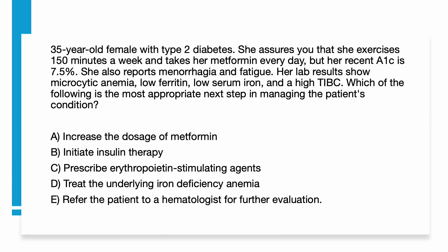A 35-year-old female with type 2 diabetes presents to your clinic. She assures you that she exercises 150 minutes a week and takes her metformin every day. Her recent A1c remains 7.5%. She also reports menorrhagia and fatigue. Her lab results show microcytic anemia, low ferritin, low serum iron, and a high TIBC. Which of the following is the most appropriate next step in managing this patient's condition? Increase the dosage of metformin, initiate insulin therapy, prescribe EPO, treat the underlying iron deficiency, or refer the patient to a hematologist for further evaluation?